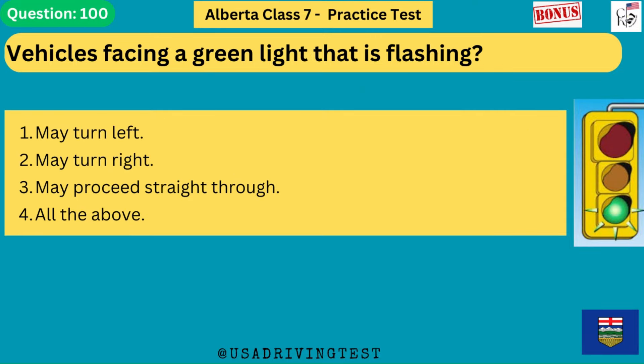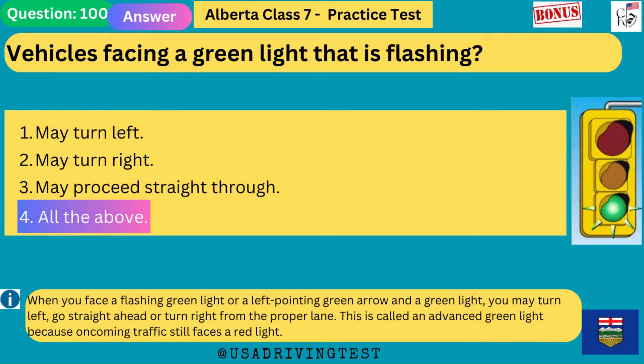Vehicles facing a green light that is flashing: 1. May turn left. 2. May turn right. 3. May proceed straight through. 4. All the above. The answer is 4: all the above. When you face a flashing green light or a left-pointing green arrow and a green light, you may turn left, go straight ahead or turn right from the proper lane. This is called an advanced green light because oncoming traffic still faces a red light.